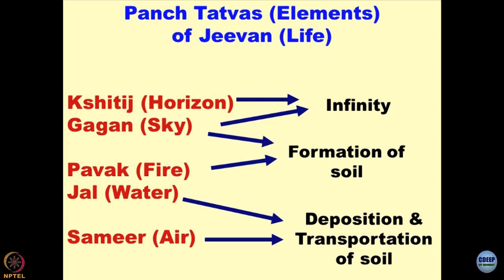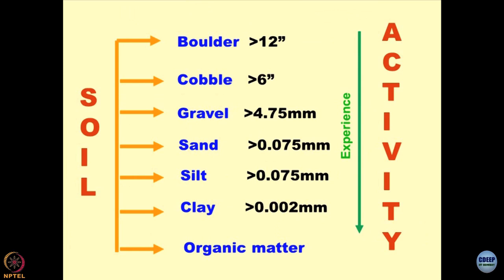Once you know the genesis of the material — the soils — your angle and perception changes. We have defined soils only in physical terms: particle size. Most of the geomechanics we study is blind to anything beyond the physics of the matter. We do not give much value to chemistry, mineralogy, biology, and biotic activity. The whole classification system is based on particle size: boulders, cobbles, gravel, sand, silt, clay, organic matter.